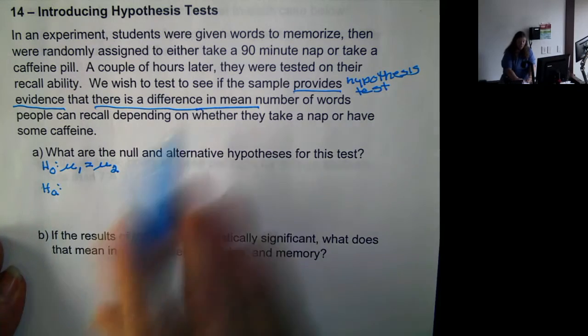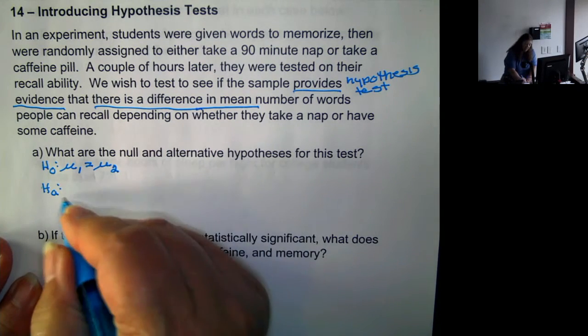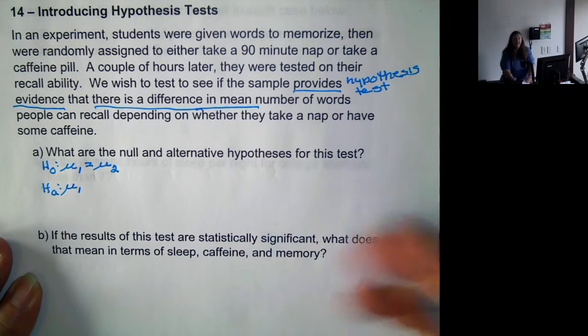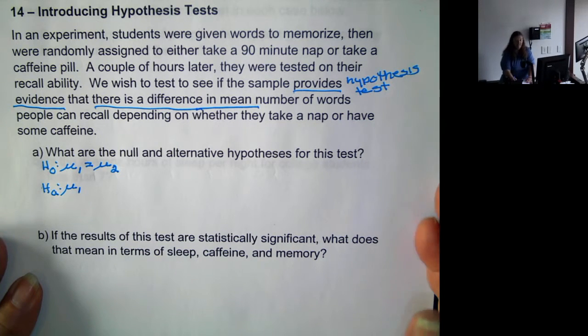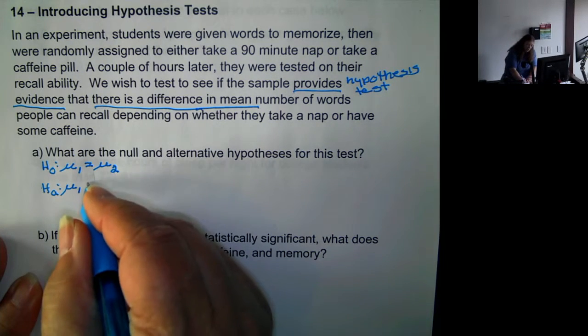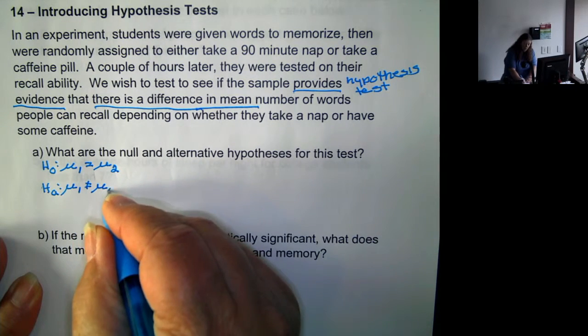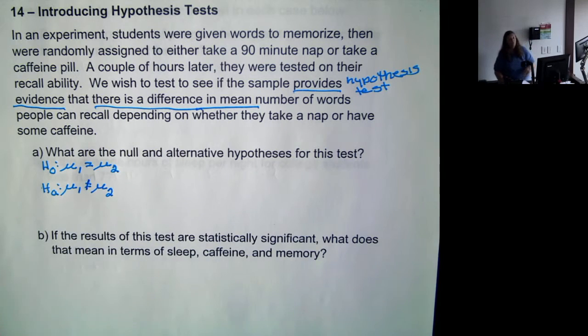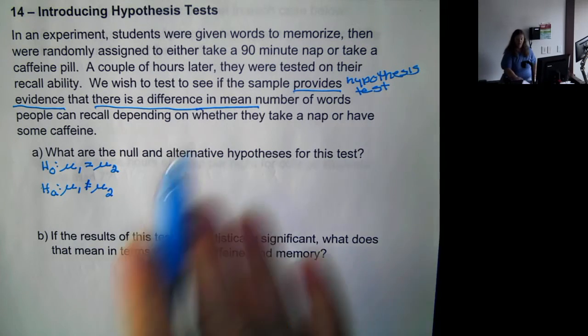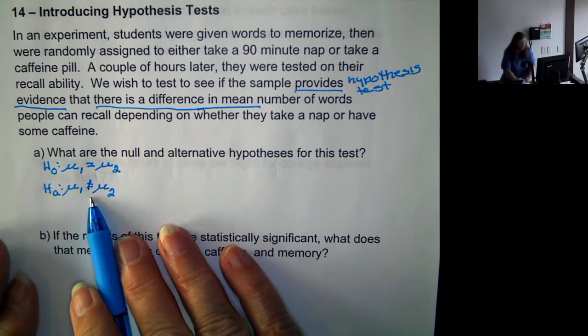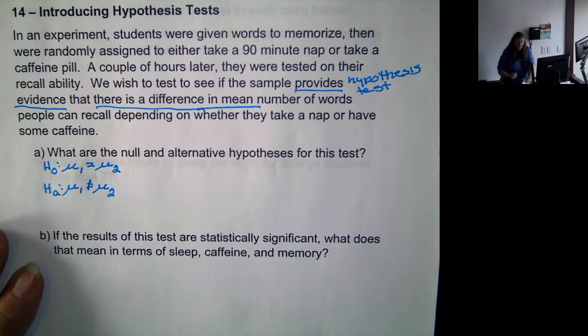Now, the alternative—we want to see if there is a difference. Well, it's not specifying a direction for that difference. So, we're simply going to use a not equal to. Which means that μ₁ could be less than μ₂ or μ₁ could be greater than μ₂. Since the direction is not given, we use the not equal to. But we also have to identify what μ₁ and μ₂ represent.